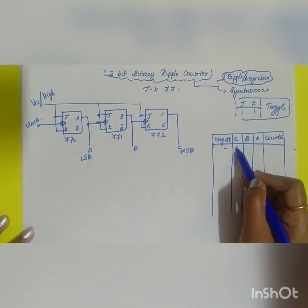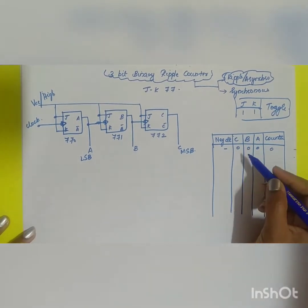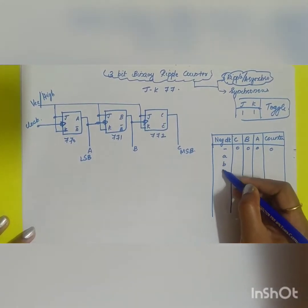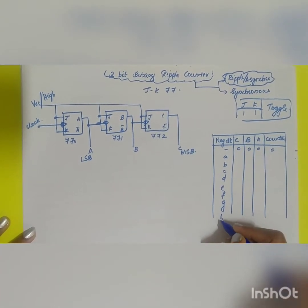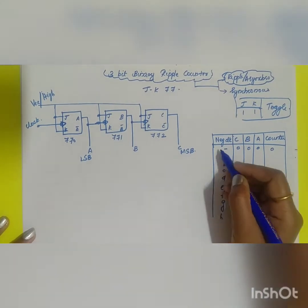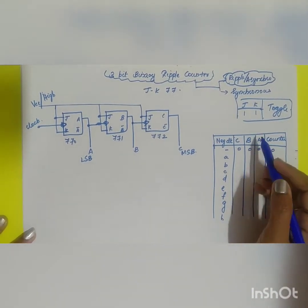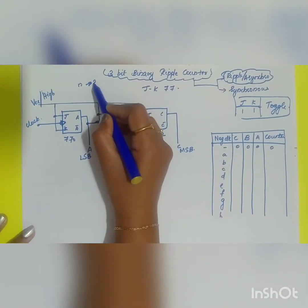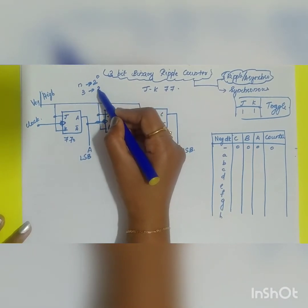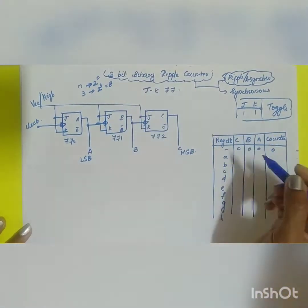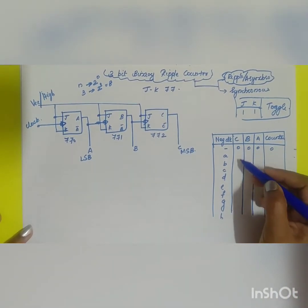Initially, the output is assumed to be 0. If you have N flip-flops as inputs, the output count will be 2^N. In this case, N = 3, so the output is 2^3 = 8 states. The counter counts from 0 to 7, then repeats.